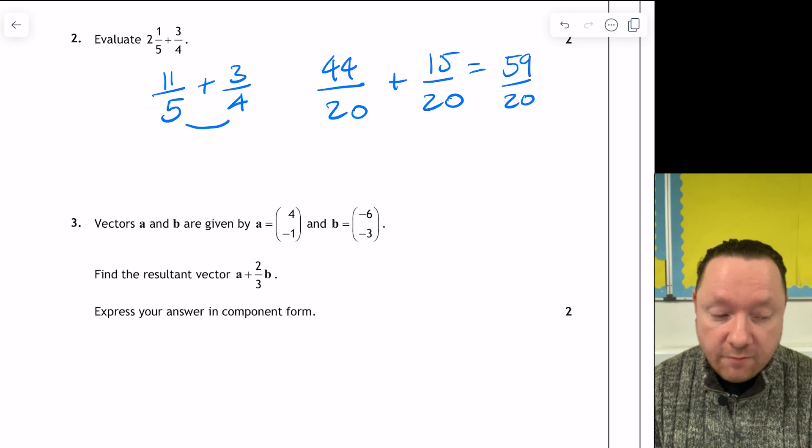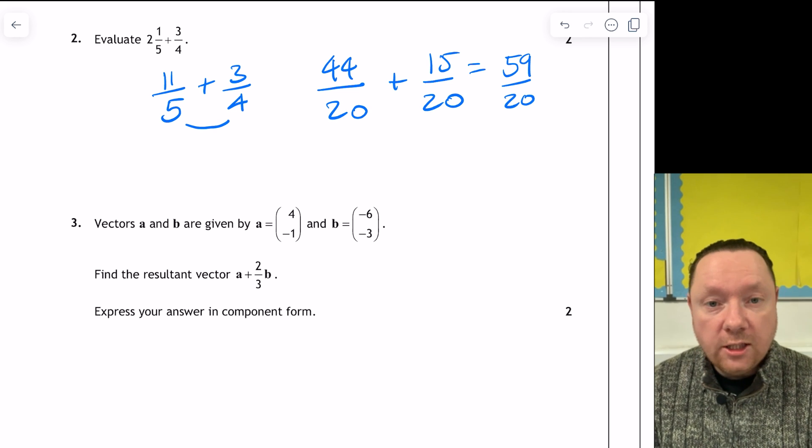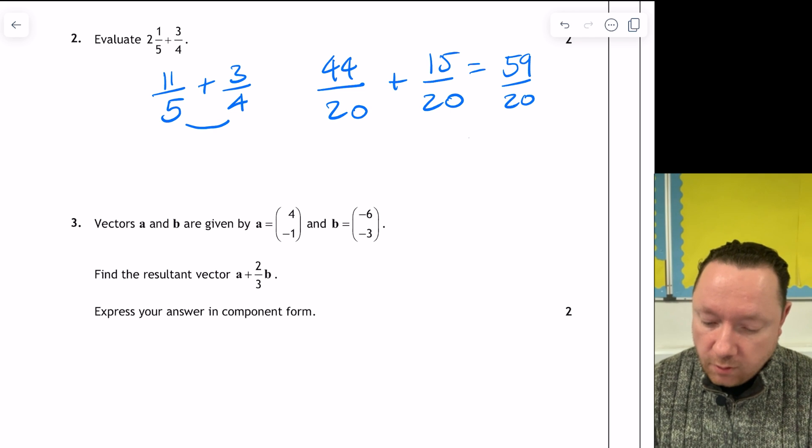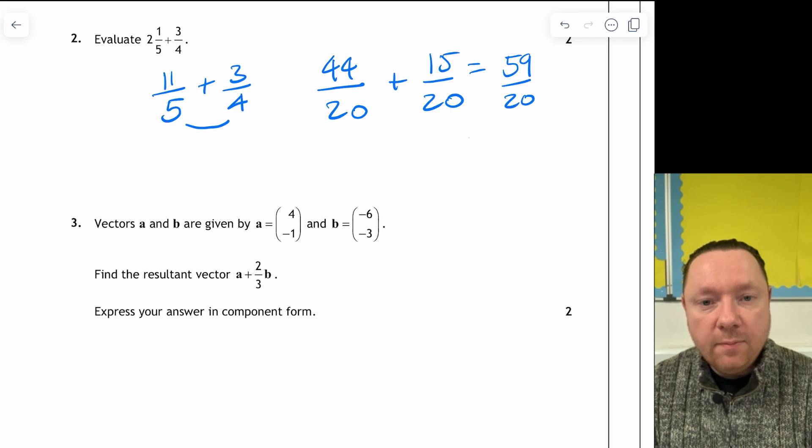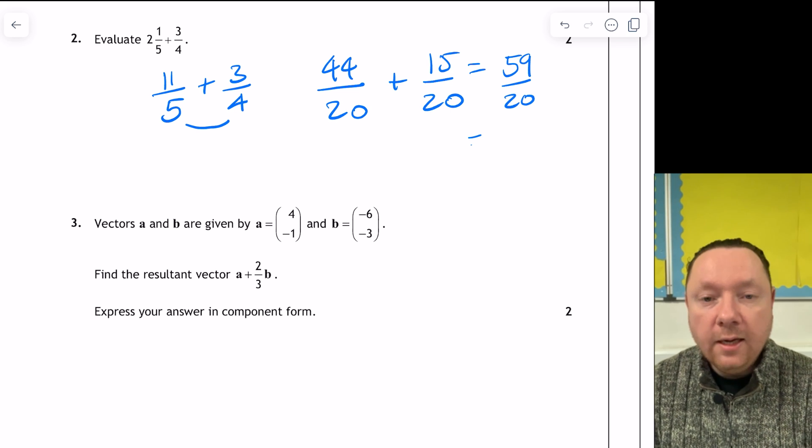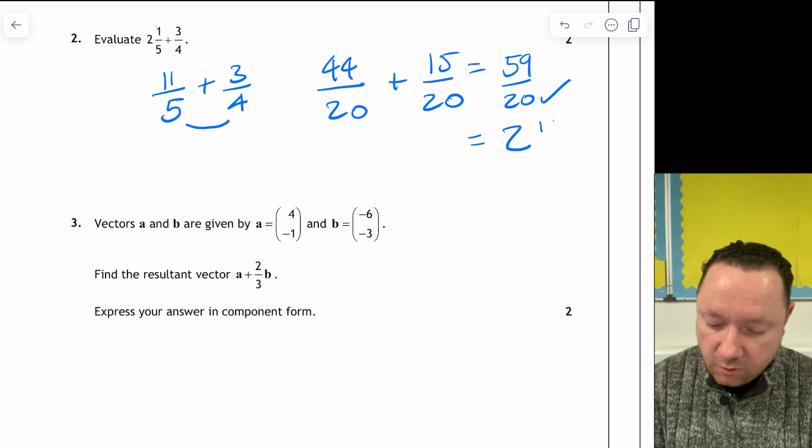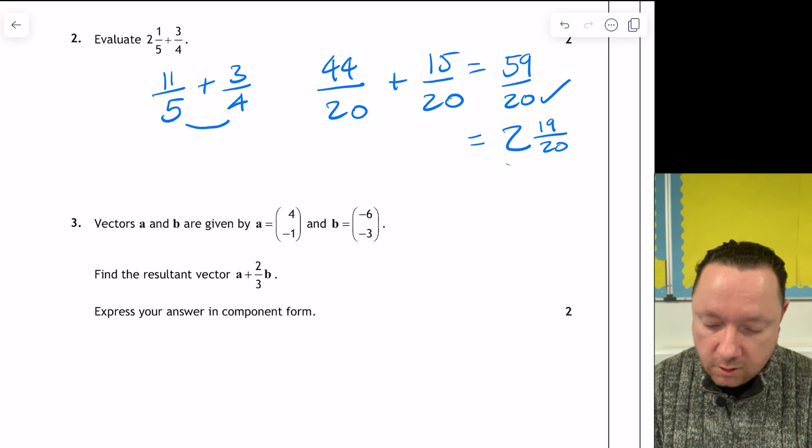So you get 59 out of 20, and you can either leave it as a simplified fraction, or change it back to a mixed number if you want. So I'm going to change it back. 20, 40 is 2, that leaves 19 left over to make 59. So I've done 2 and 19 over 20.